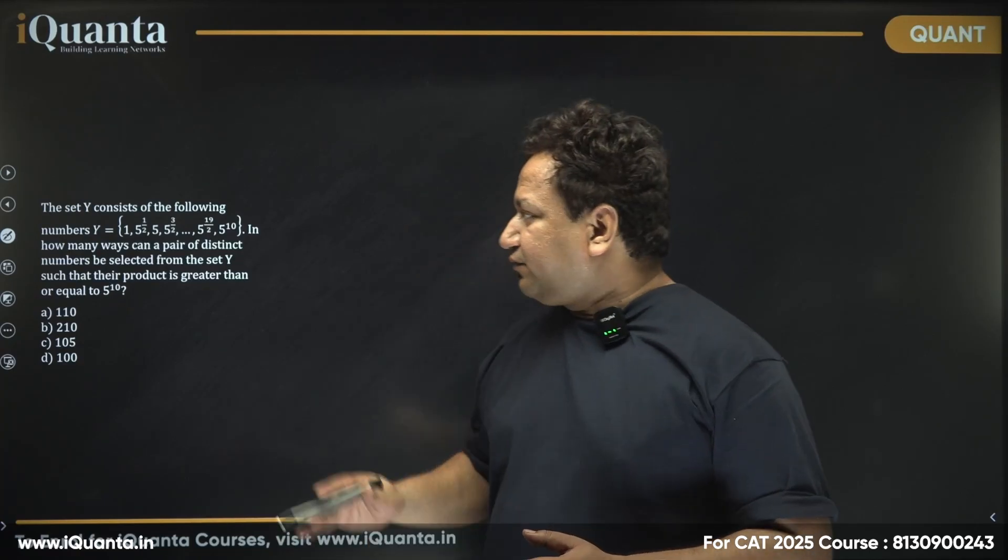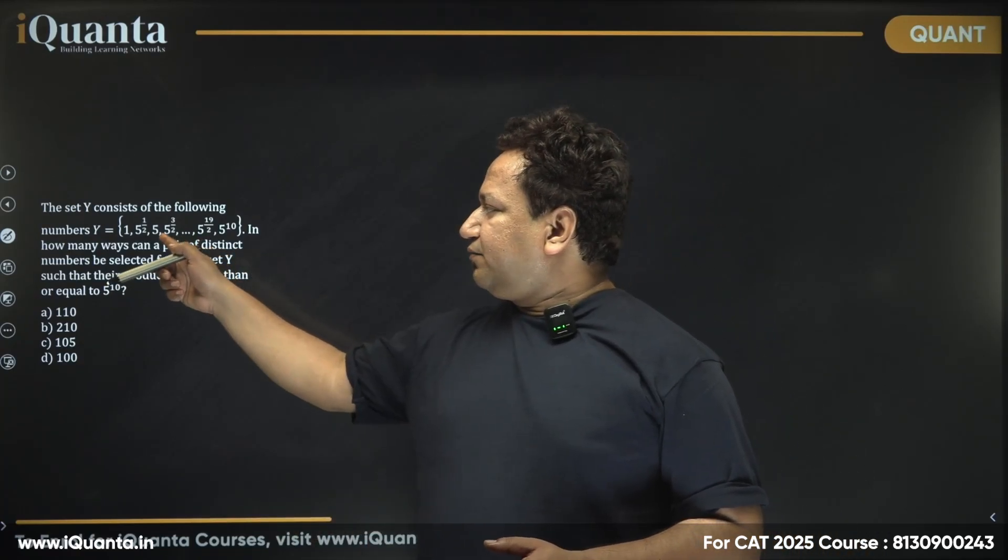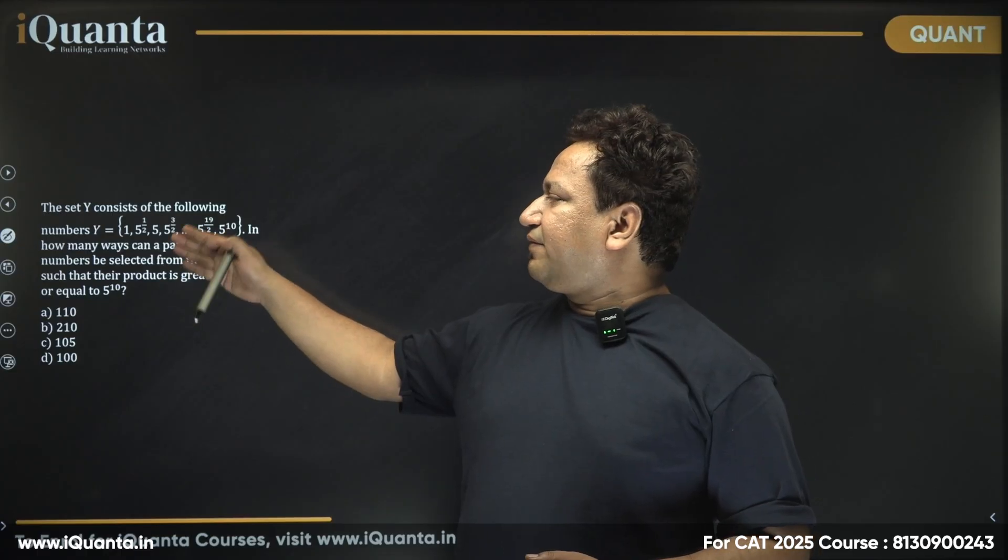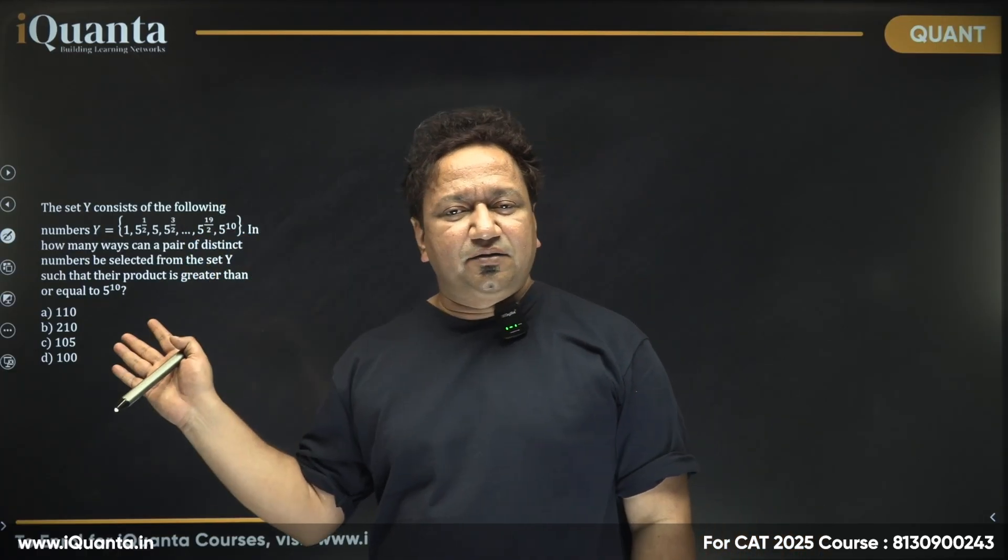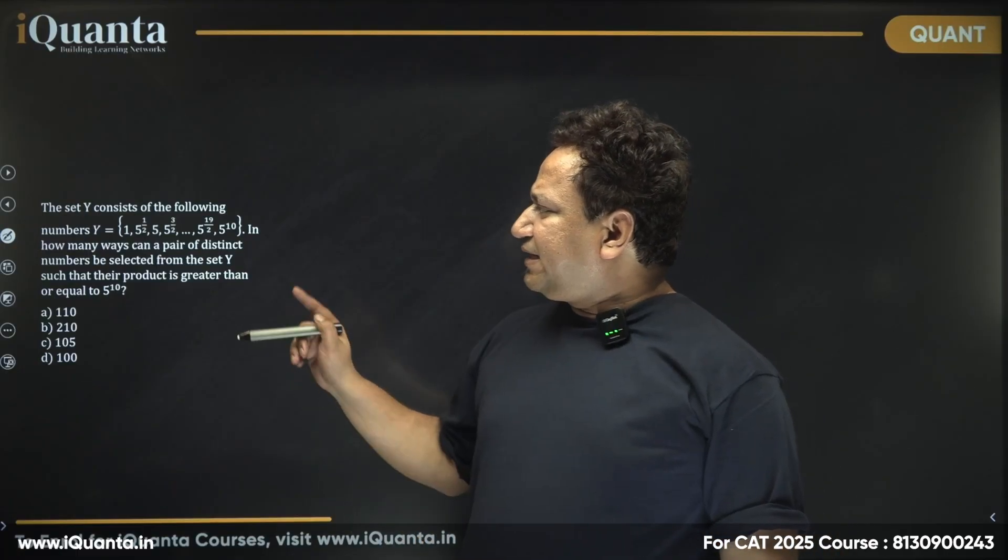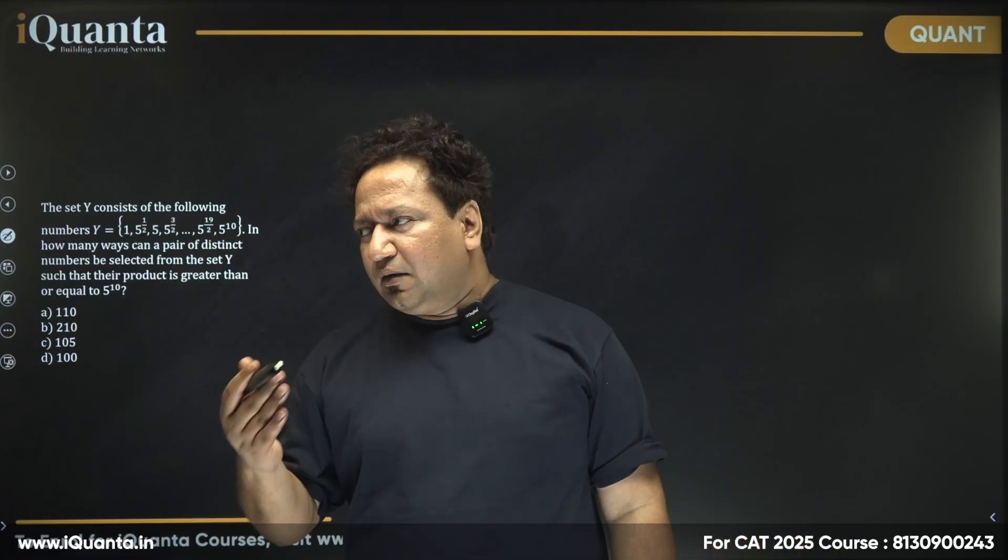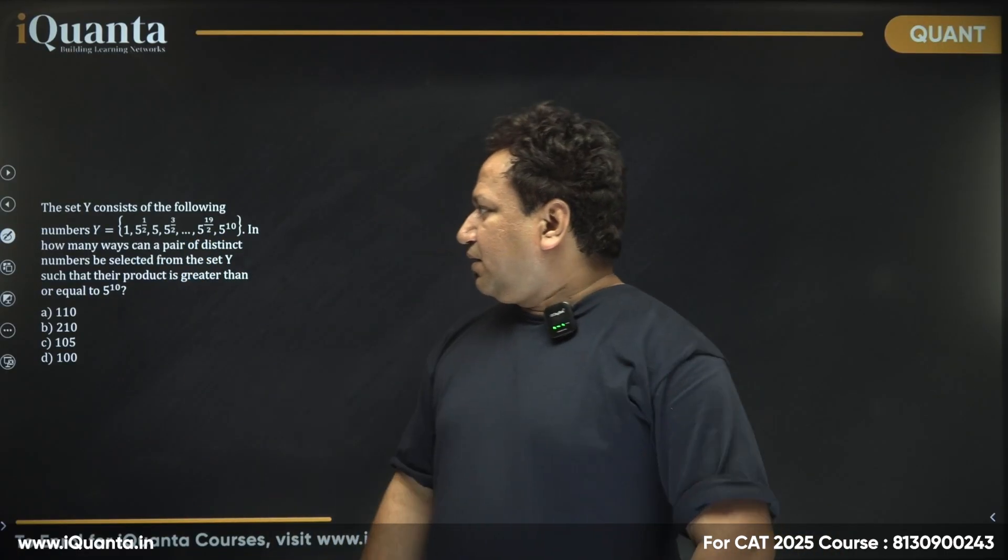The set Y consists of the following numbers: 1, 5^(1/2), 5^1, 5^(3/2), and so on till 5^(19/2) and 5^10. So basically the powers are increasing in a gap of 0.5.